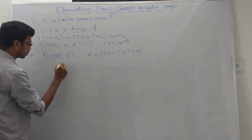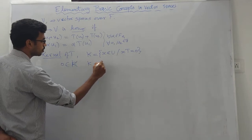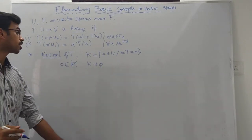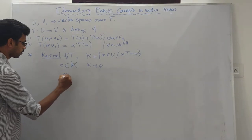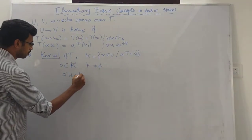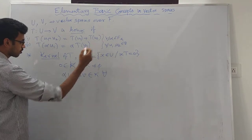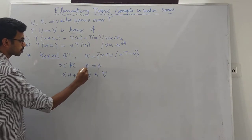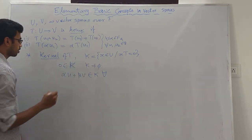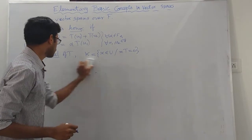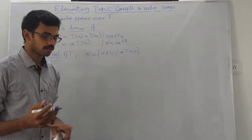First, the zero element is in the kernel K, so the kernel is non-empty. Similarly, to verify the subspace condition, alpha U plus beta V belongs to K for every alpha, beta in the field F and U, V in the kernel K.